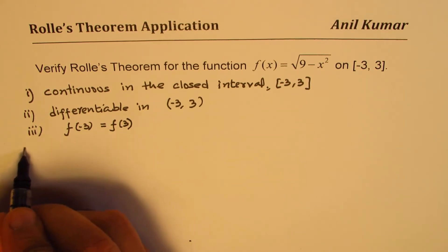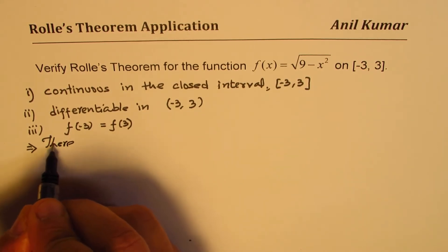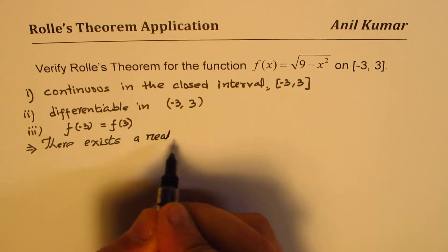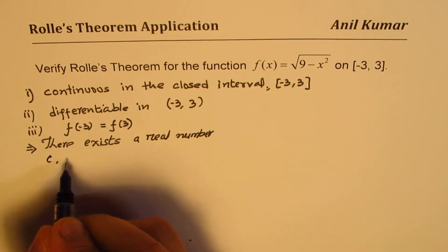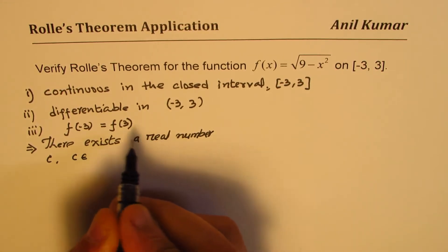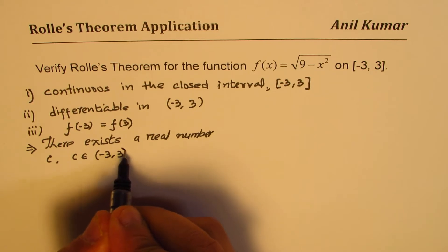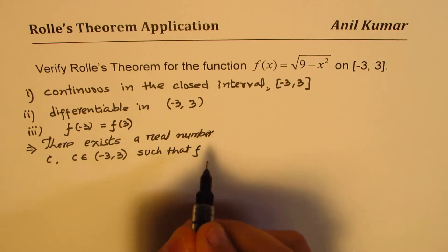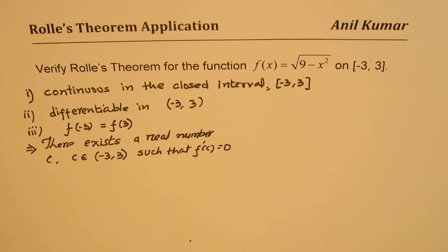Once you verify those three conditions, then Rolle's Theorem states that there exists a real number c, where c belongs to the open interval — in this case, (-3, 3) — such that f'(c), the derivative of the function at c, is equal to 0. So that is what Rolle's Theorem is.